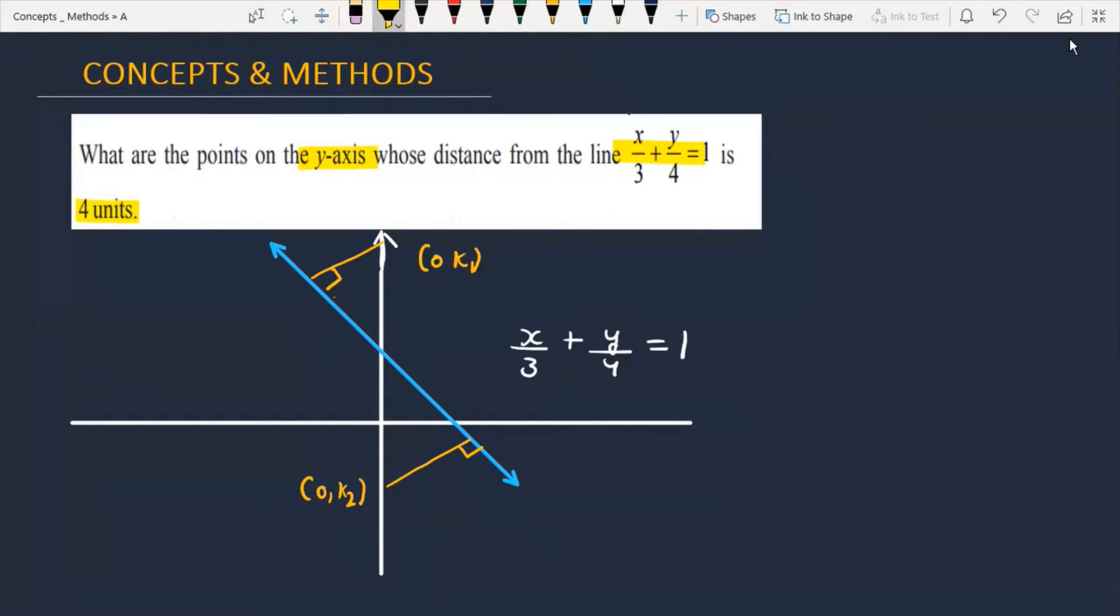First you can check the question's information. One line you have given is x/3 + y/4 = 1, means its x-axis intercept is 3 units and y-axis intercept is 4 units.